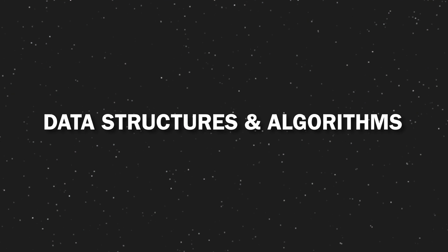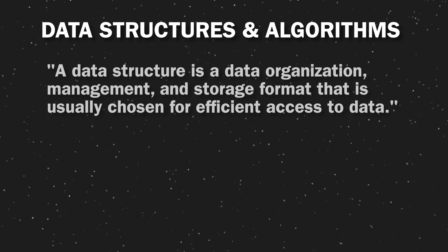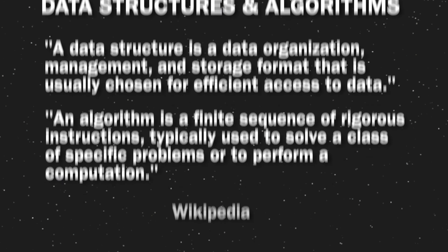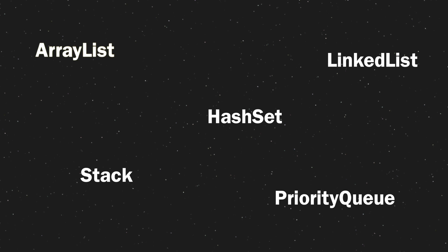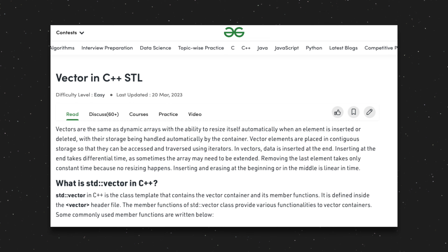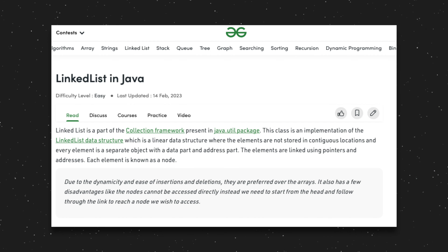Especially when it comes to something like the fundamentals in the early classes, it's important to get a sense of whether a college is more focused on the theory or the implementation. As a good example, think of something like data structures and algorithms. If you use any major language like Java or C++, you'll have a library that probably has a lot of these things predefined for you, and it's just a matter of learning how to use an ArrayList or vector or a linked list.